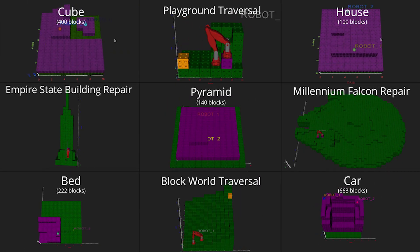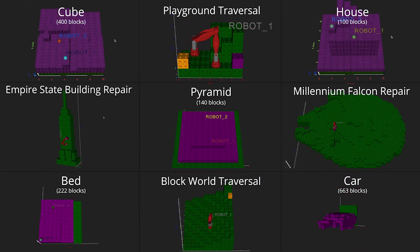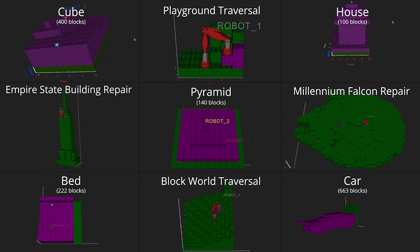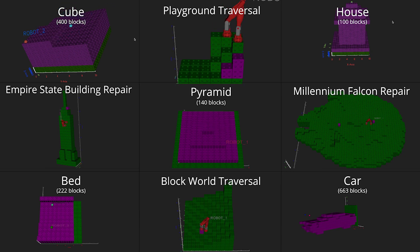This building algorithm can be used to build any connected structure, from houses to cars. Our robots can place blocks in challenging configurations such as at the top of the Empire State Building.